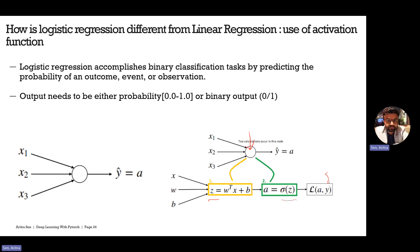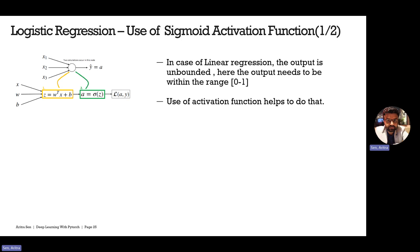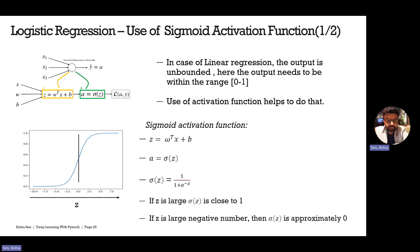We calculate the loss using the actual value Y and the predicted value A. Similarly to linear regression, we can do optimization so that the predicted value is as close as possible to the actual value. In case of logistic regression, the function I'm talking about is what we call a sigmoid activation function. The role of this sigmoid activation function is to squeeze the output value within the range of 0 to 1, since the linear regression output is unbounded.